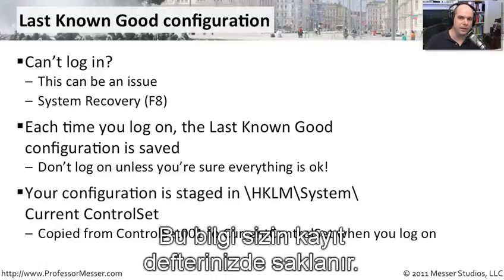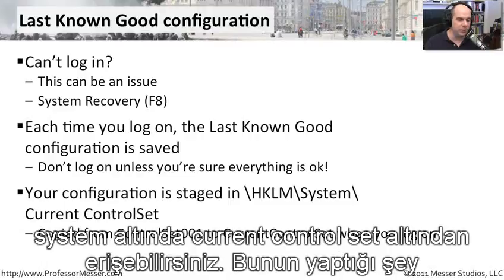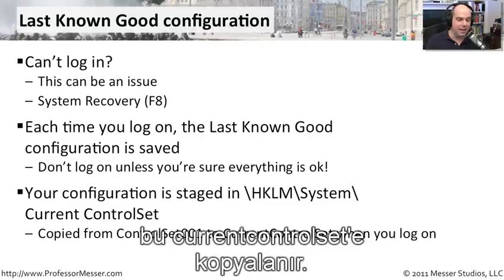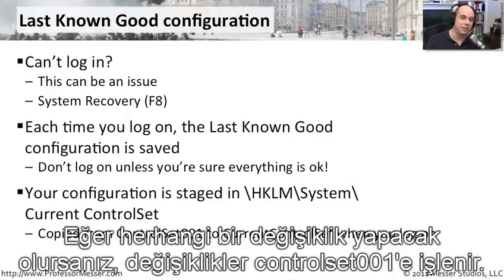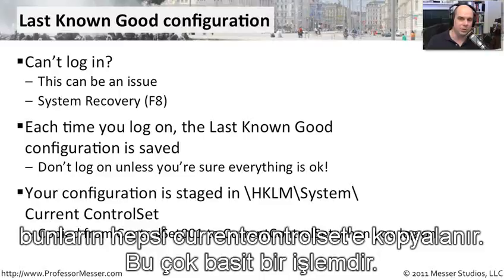This information is stored right in your registry — under HKEY_LOCAL_MACHINE, go into the system area under current control set. It takes control set 001, sets that aside, and as soon as you log in, it is copied to current control set. Any change made is made to control set 001, which is what your system uses to boot. Once that works properly and you log in, it copies all of those to the current control set.